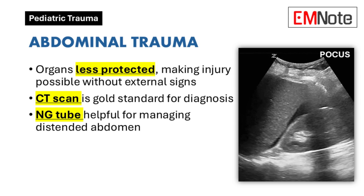Abdominal Trauma: Children's abdominal organs are less protected, making them susceptible to injuries even without obvious external signs. A CT scan is the gold standard for diagnosing abdominal injuries, and nasogastric tube decompression is essential for managing distended abdomens, particularly in stressed children who may swallow air.